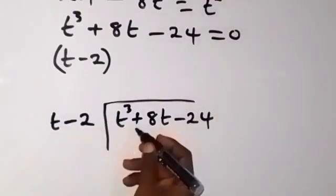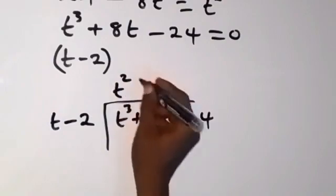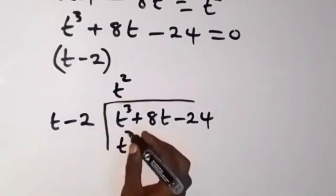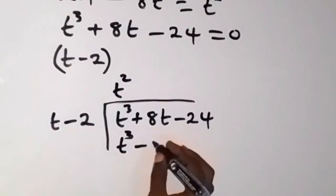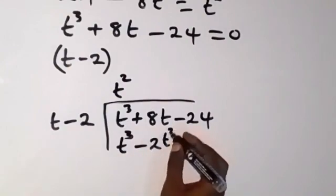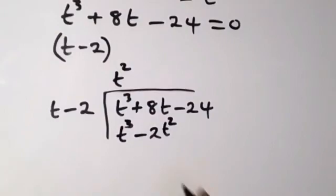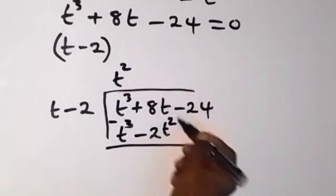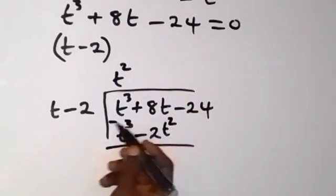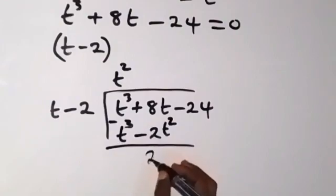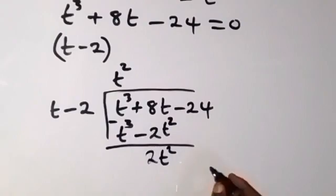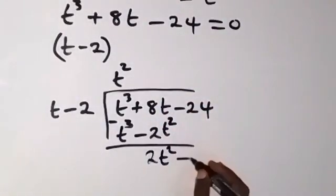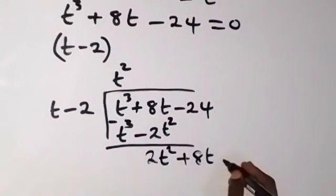When t goes into t cubed we get t squared. Using t squared to multiply, we get t cubed and minus 2t squared. After subtracting, t cubed cancels, leaving 2t squared. Bringing down minus 8t gives us 2t squared plus 8t. Then t goes into 2t squared giving plus 2t. Multiply: 2t squared minus 4t. Subtract.